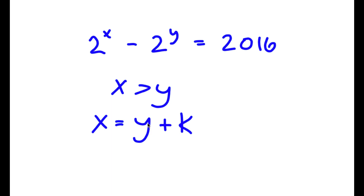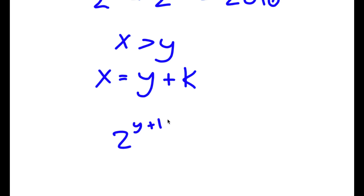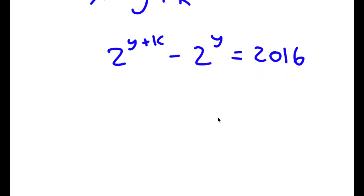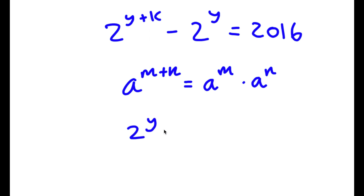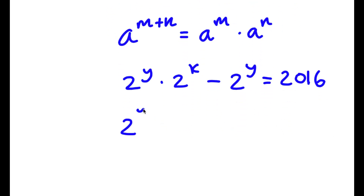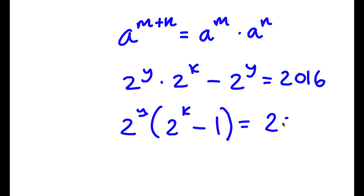If I replace x with y plus k, I get 2 to the power of y plus k minus 2 to the power of y is equal to 2016. Now, using the rule a to the power of m plus n equals a to the power of m times a to the power of n, I get 2 to the power of y times 2 to the power of k, minus 2 to the power of y, equals 2016. Factoring out 2 to the power of y, I have 2 to the power of y times (2 to the power of k minus 1) is equal to 2016.